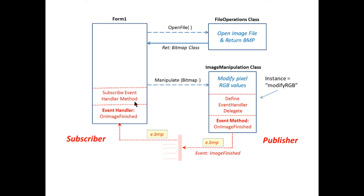Here's the diagram we used to design our image manipulation code in part two. We've got the main Windows application form, a file operations class, and the image manipulation class which modifies an image and sends out an event when the image has been modified — essentially saying, 'I finished modifying the image, if you want it you can go grab it.' In red is all the code we had to generate to make the event handler stuff work. The main form is a subscriber and the publisher of the event is the image manipulation class.